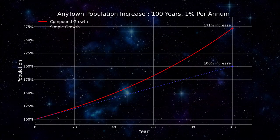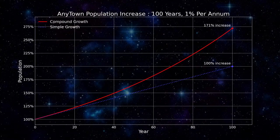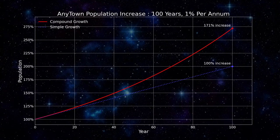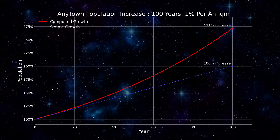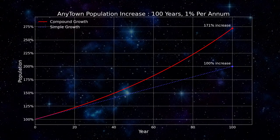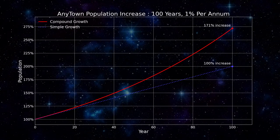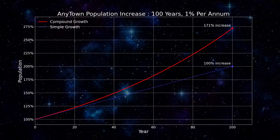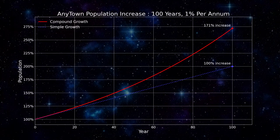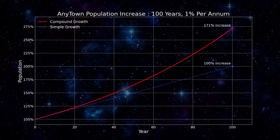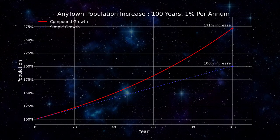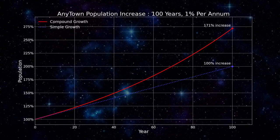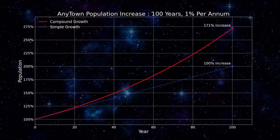The reason it's wrong is because children have children of their own, and their children have children ad infinitum. Consequently, as time passes, the 1% growth rate is applied to an increasing and reproducing population, an effect called compounding.